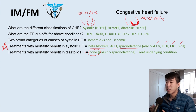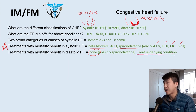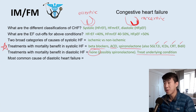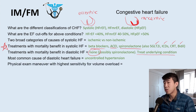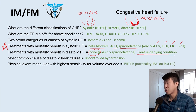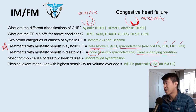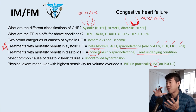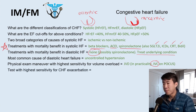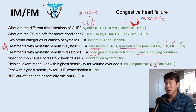For diastolic heart failure, we treat the underlying condition — most commonly uncontrolled hypertension. The physical exam maneuver with the highest sensitivity for volume overload is JVD, though in practice it's hard to see in obese patients — so many clinicians now use point-of-care ultrasound to assess IVC. The lab test with highest sensitivity for CHF exacerbation is BNP; a BNP less than 100 generally rules out significant volume overload causing CHF exacerbation.